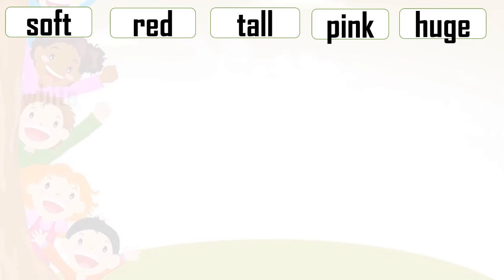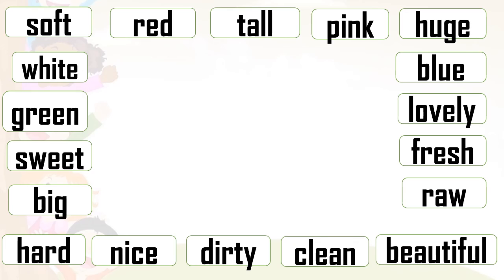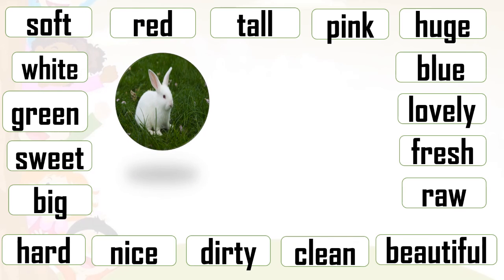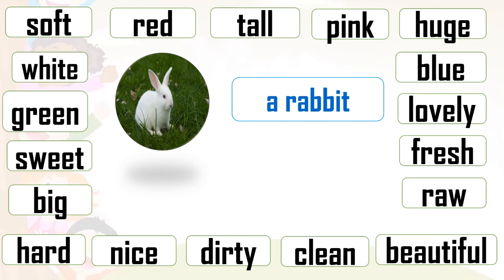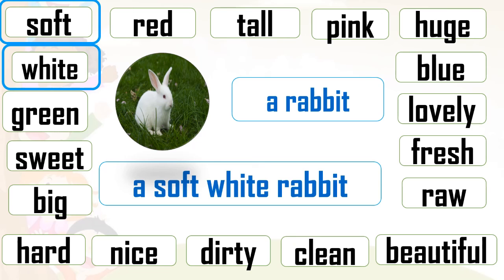Then we will do with some more pictures. The next picture — oh wow, what is it? A rabbit. How is the rabbit? Soft. How is the rabbit? White. It's really soft — softy, softy — and the color is white. So our phrase is ready: a soft white rabbit. So easy and very interesting. Again and again we go on reading the words, so we develop our reading skill also.